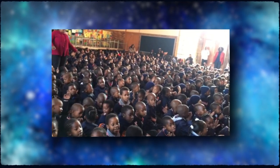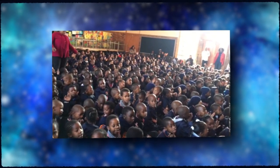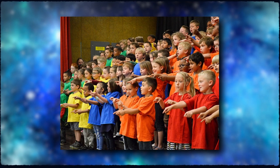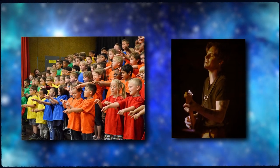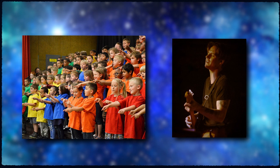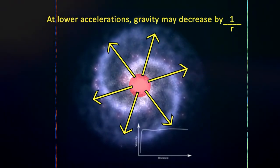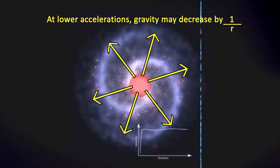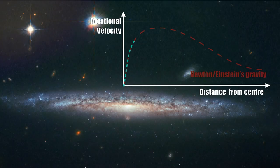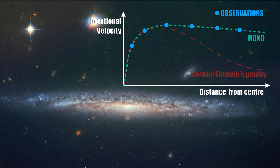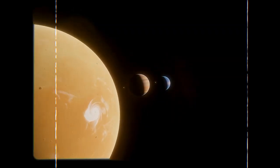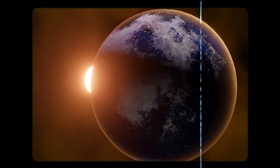Imagine the classic laws of gravity as an old-school song. They work great for most tunes, but then along comes a song with a different rhythm and things don't just sync up. That's what MOND tries to address. It suggests that gravity might have some new moves for slow-moving or low-mass objects. In our regular lives, gravity dances along just as Newton predicted. But once we zoom out to the grand cosmic scale, things get a little funky.